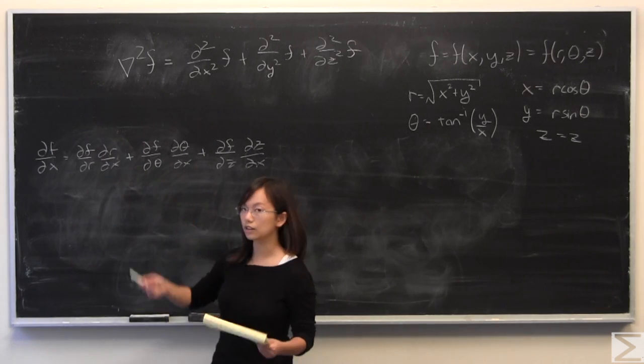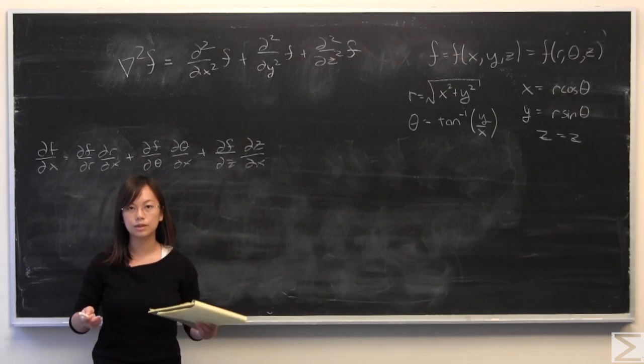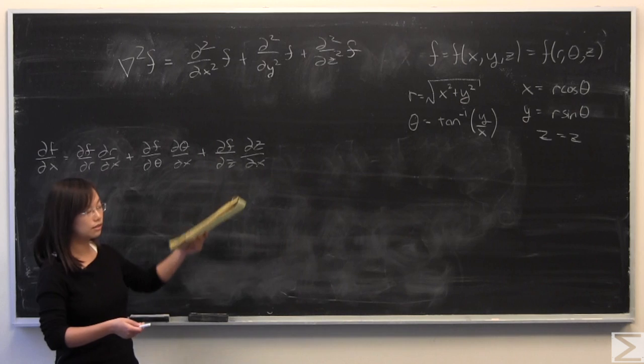The Laplacian in Cartesian coordinates, which I have shown above, is the second partial derivative with respect to x, y, and z applied on this function.